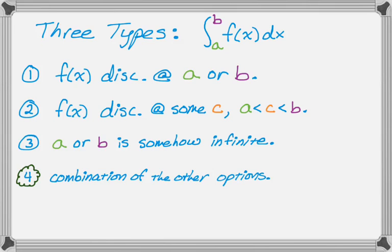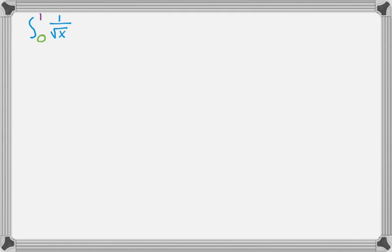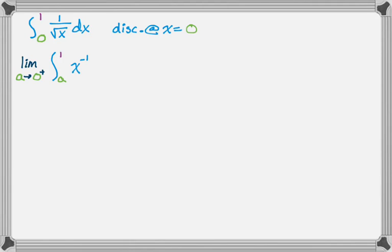Now let's look at some examples of the first type. Here we have the integral from 0 to 1 of 1 over radical x dx. You always want to look at it and figure out what the problem is. The problem here is that f of x, which is 1 over radical x, is discontinuous at 0. We deal with improper integrals by taking limits. In this case, we take the limit as a approaches 0 from the right, because we have to be between 0 and 1, so the only way to approach 0 is from the right.